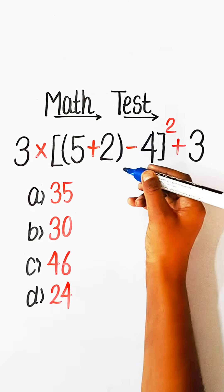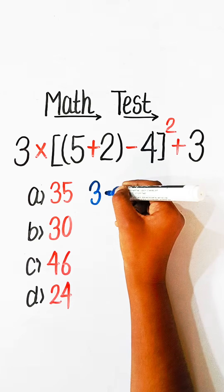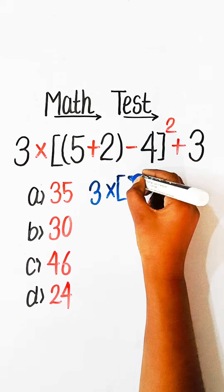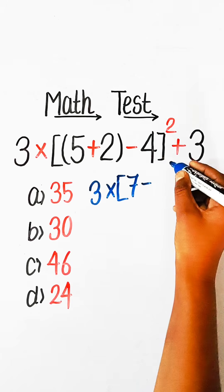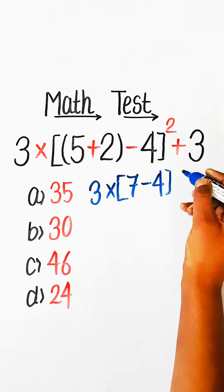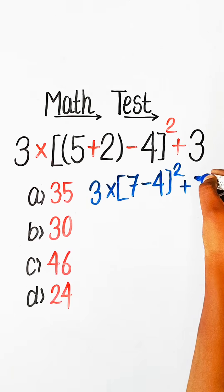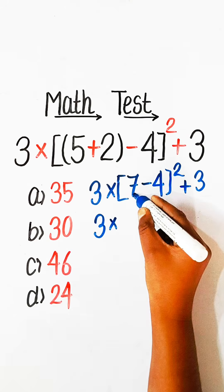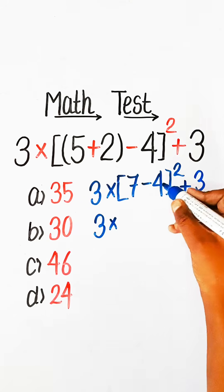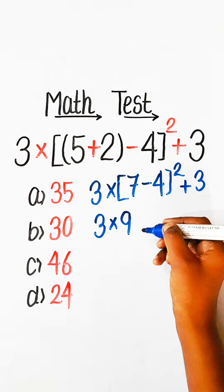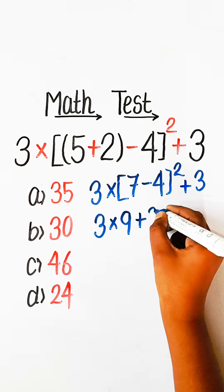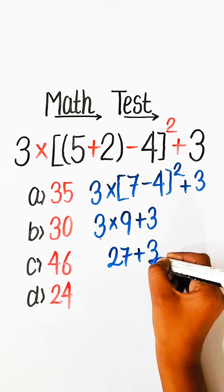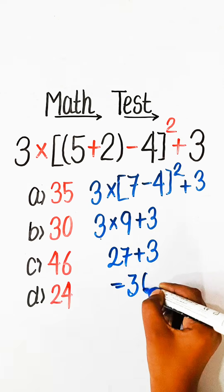Firstly, we have to solve the bracket part. We will write here: 3 multiplied by 5 plus 2 is 7, minus 4 squared plus 3. 3 multiplied by 7, minus 4 squared is 3 squared, which is 9. So 3 multiplied by 9 plus 3 equals 27 plus 3 equals 30.